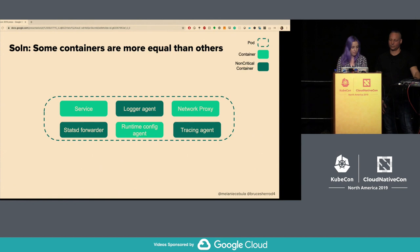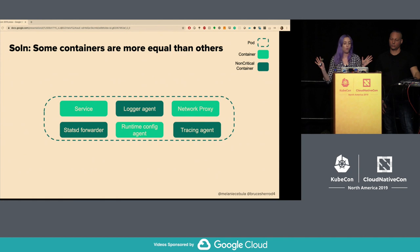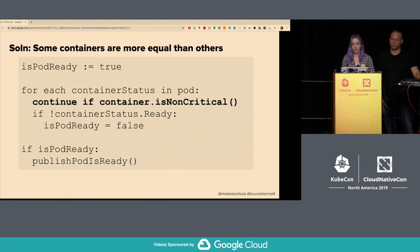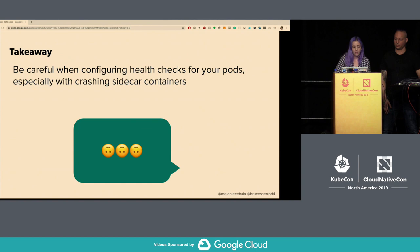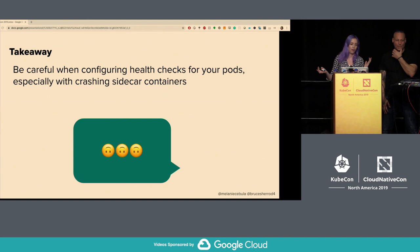The fix: mark containers that shouldn't affect pod readiness as non-critical — logger, tracing, statsd, and others — then add one line to our service discovery logic to not consider non-critical containers. We've considered other solutions; this is a stopgap but it's evolving. Regardless of the solution, the main takeaway is: be careful when configuring health checks for pods. Keep in mind how containers affect overall pod health, and how crashing sidecar containers become unready even without probes configured.